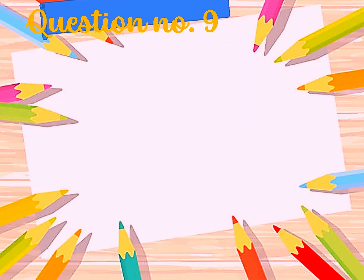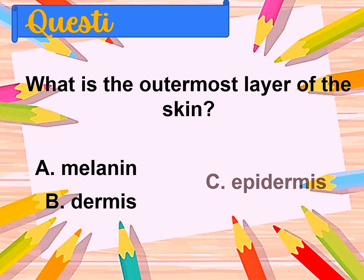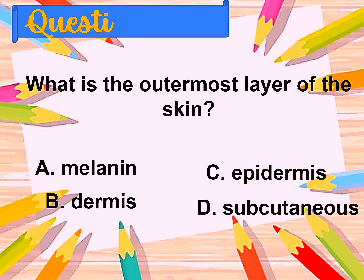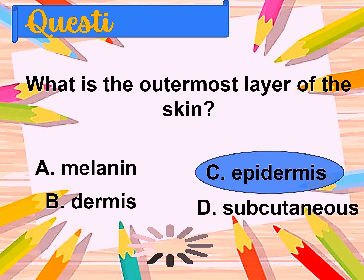Question number nine: What is the outermost layer of the skin? A. Melanin, B. Dermis, C. Epidermis, D. Subcutaneous. The correct answer is epidermis.